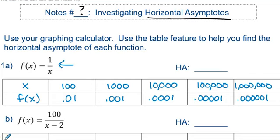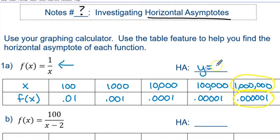I've gone back to my notes handout and inputted those values from the table. Basically what we're seeing is that as x approaches infinity — because we're letting x get really, really large — the y values are approaching zero. That gives us the horizontal asymptote y equals zero.